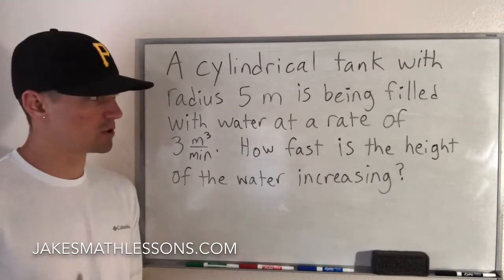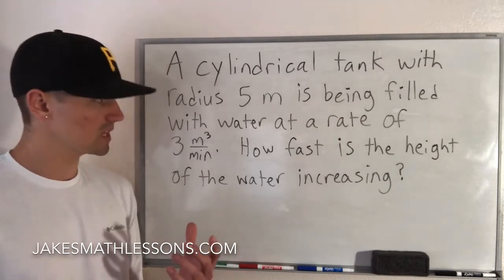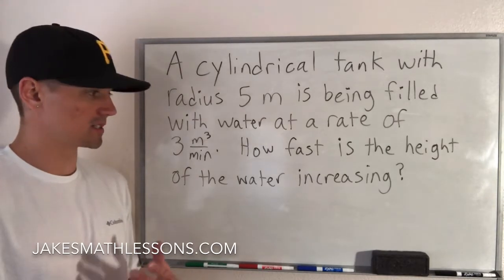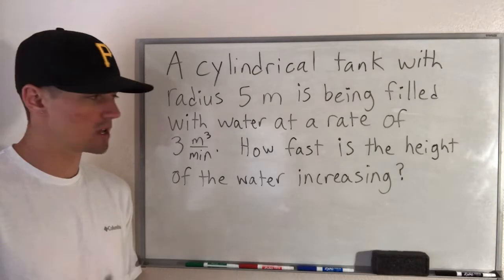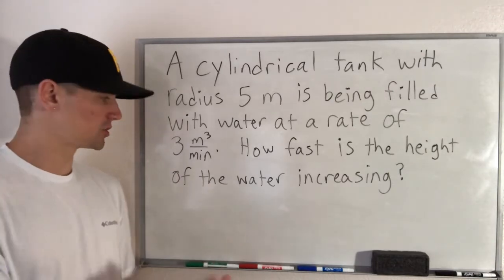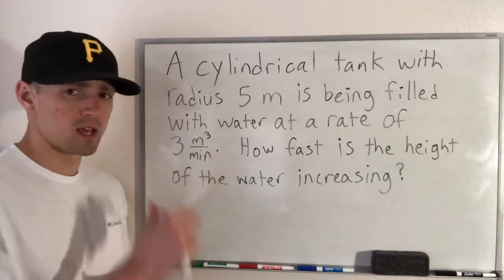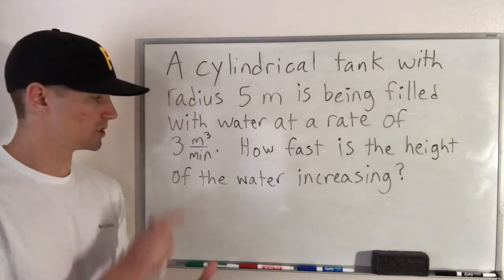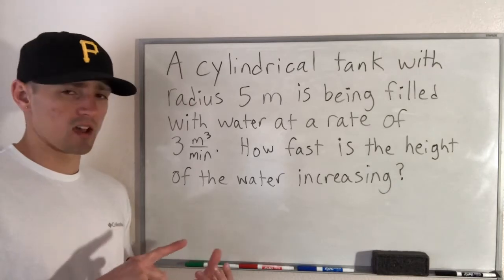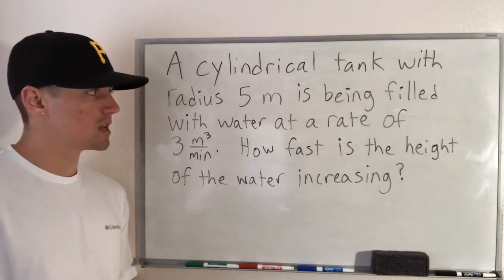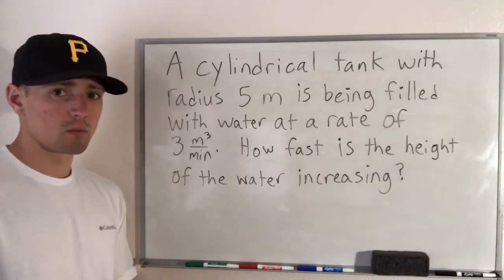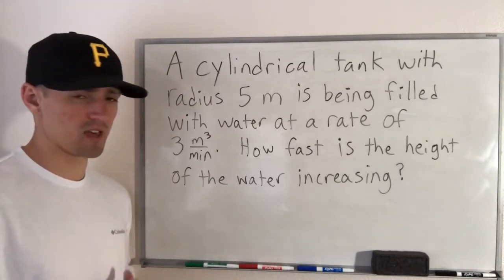This is kind of a weird problem because when you first read it, it seems like we don't really have enough information. It just says how fast water is being pumped into this tank. It doesn't tell us the height of the tank, or the height of the water at the moment we're measuring. It really just tells us the radius of the tank and how quickly water is being pumped in — 3 cubic meters per minute — which is a measure of how quickly the volume of water is increasing. So we have some information about the volume and the radius, but we don't really have any information about the height.